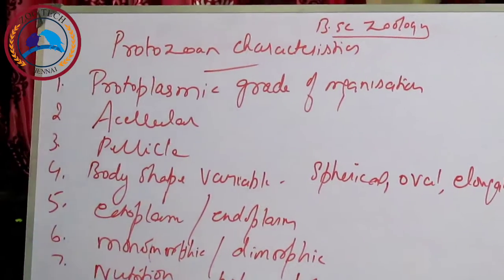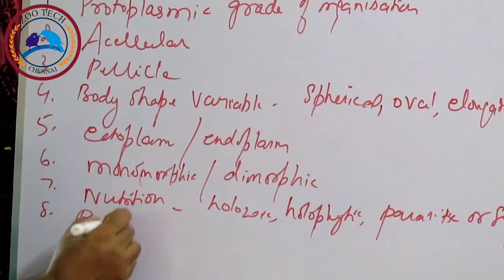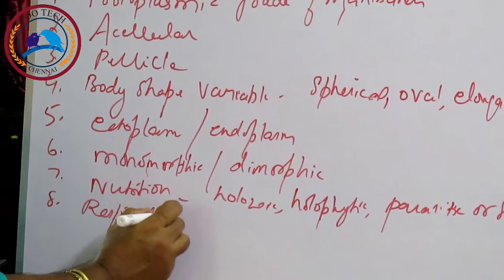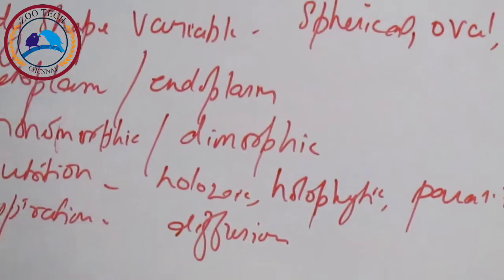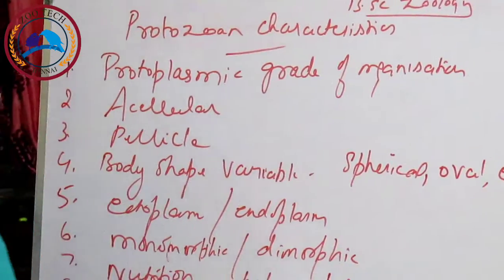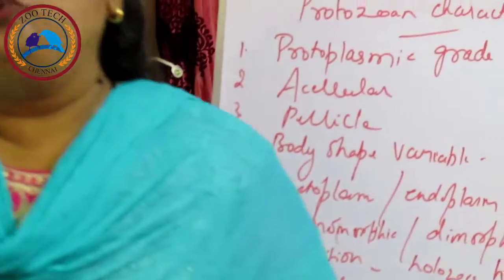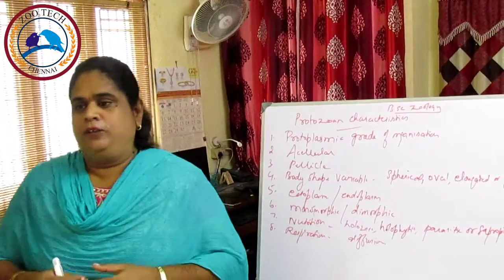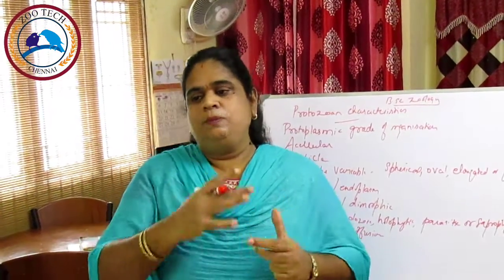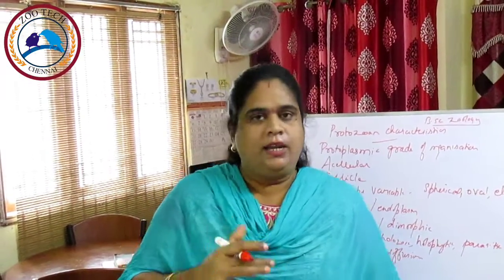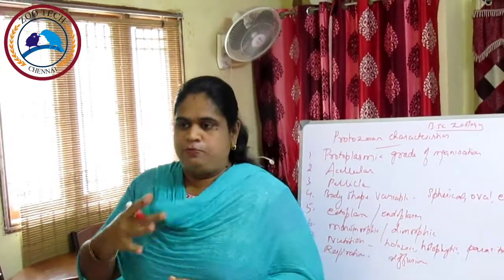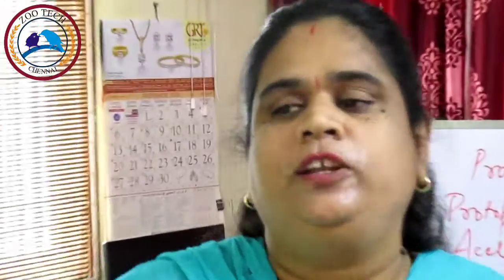Respiration in protozoans occurs by means of diffusion. Protozoans do not have any organelles for the process of respiration. The limiting permeable membrane acts as a respiratory surface, so respiration occurs by diffusion through the general body surface.